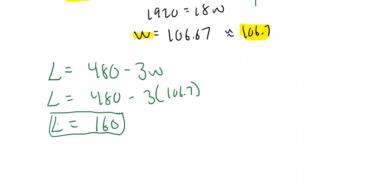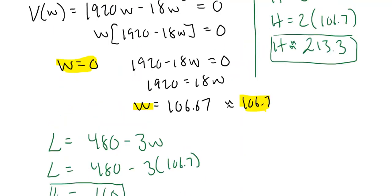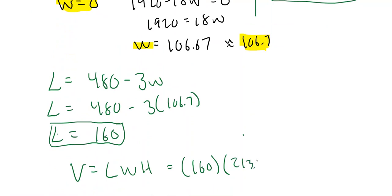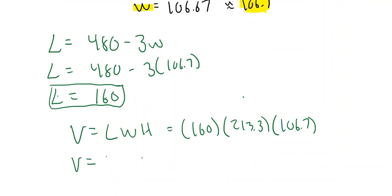we want to find the volume of the bag finally. And so the volume is the length times the width times the height. So that is the 160 times the 213.3. And so the volume is going to be approximately 3,612,480 cubic centimeters. And so that is another optimization problem.